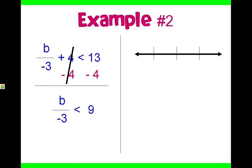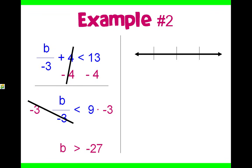And 13 minus 4 is 9. We're still not done — that negative 3 is in our way. So if we are dividing by a negative 3, to get rid of it, we must multiply by a negative 3. You do the inverse operation, and what you do to one side, you do to the other. Our opposites will cancel out, leaving us with b. In this case, we did multiply by a negative number, so our inequality symbol is going to be flipped. And 9 times negative 3 is negative 27. That is our answer.